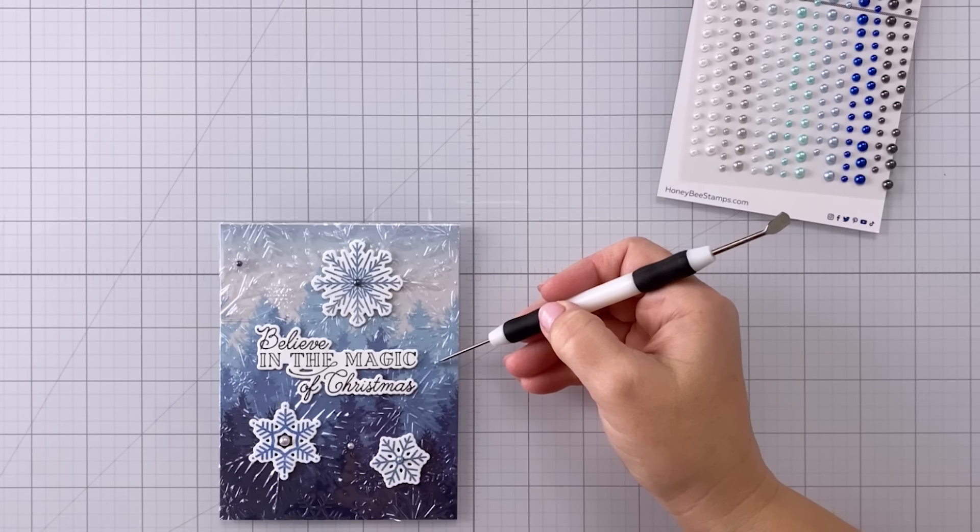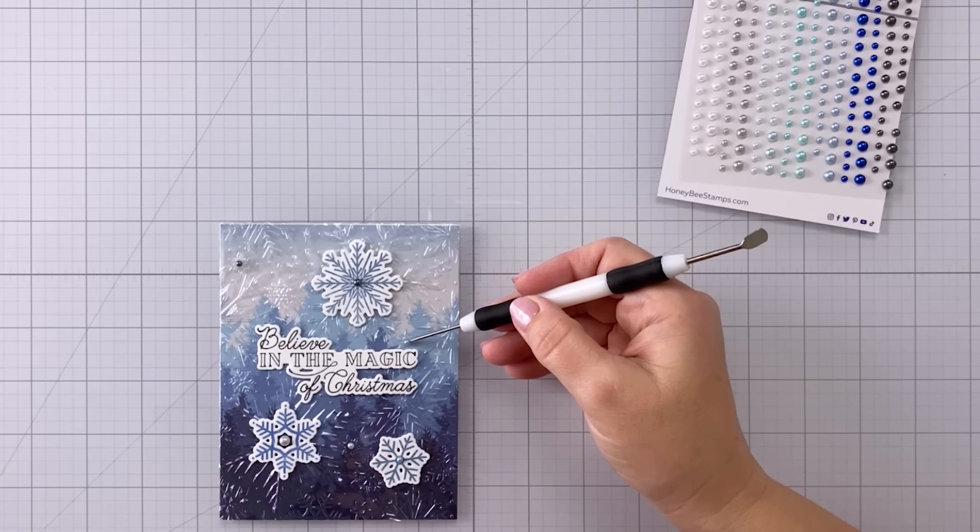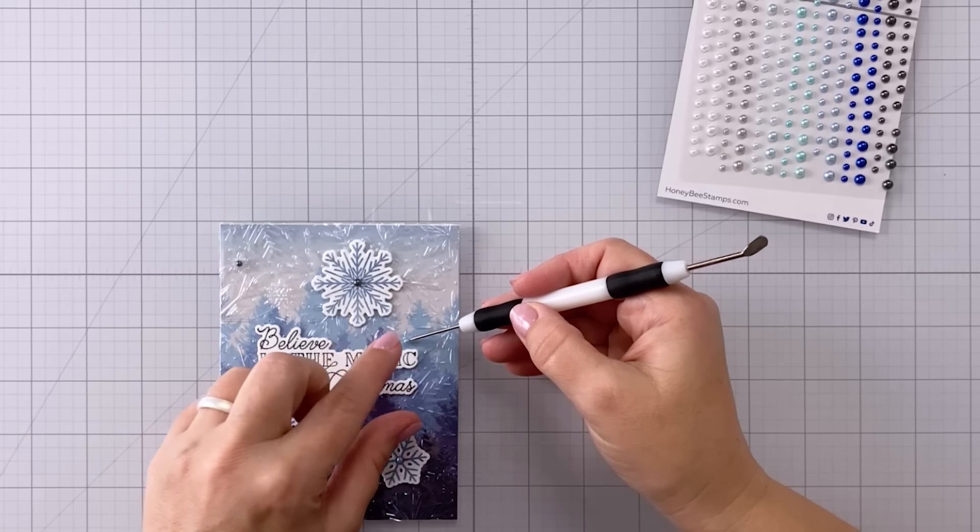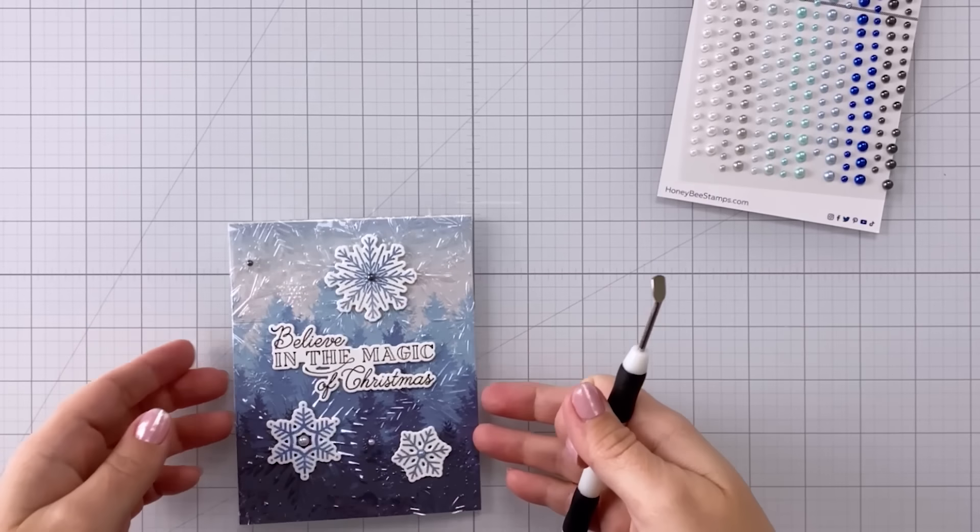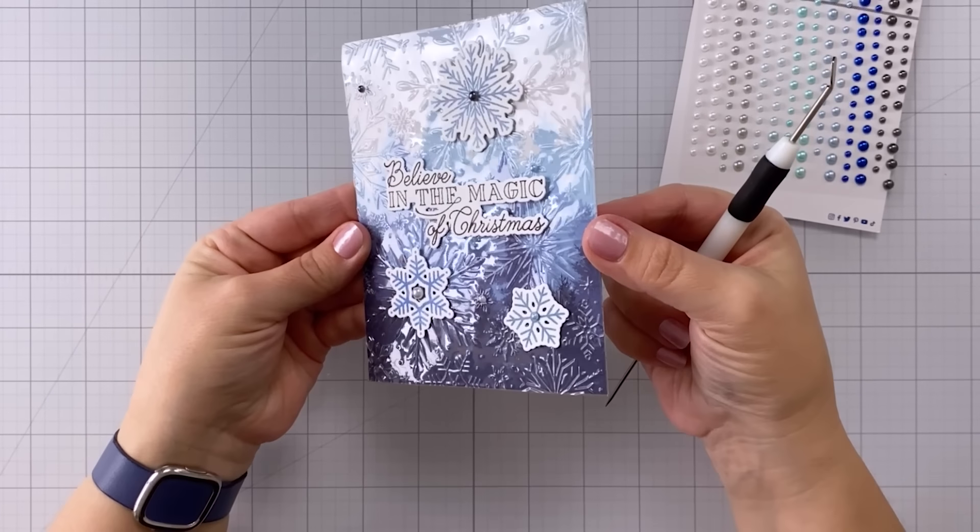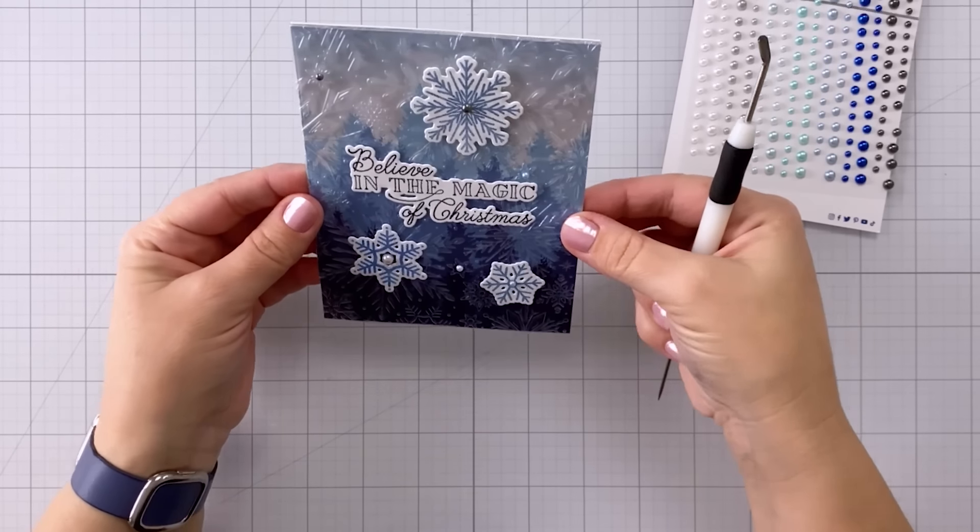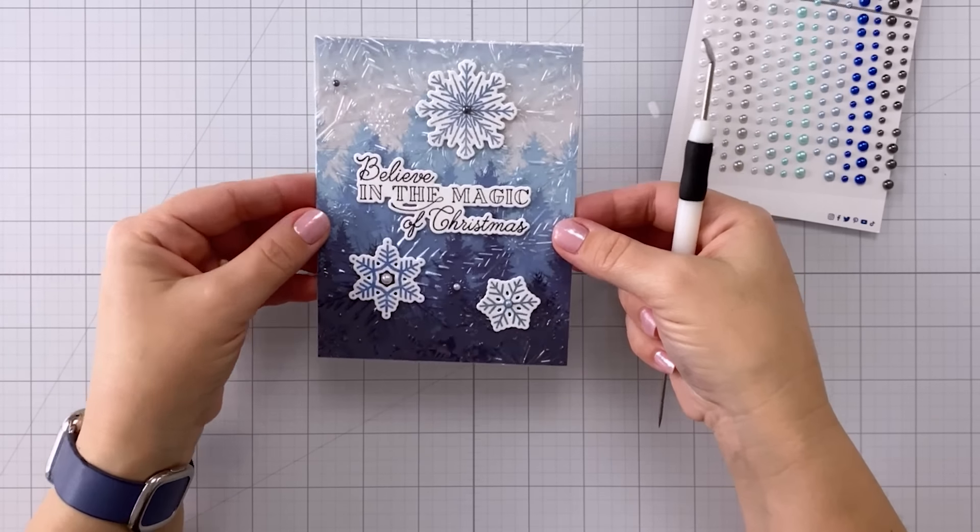To make things a little more fancy I'm bringing in some winter pearl stickers and I'm using some white ones, some light blue ones, and then some dark silver ones and I'm just placing them here and there around the front of the card to add that little bit of elegance.